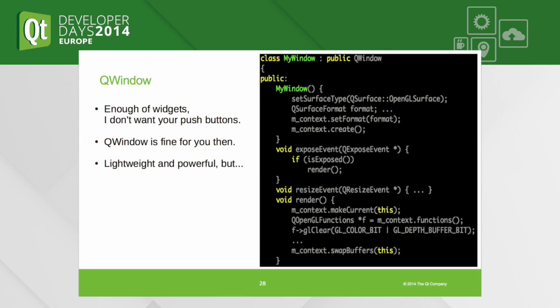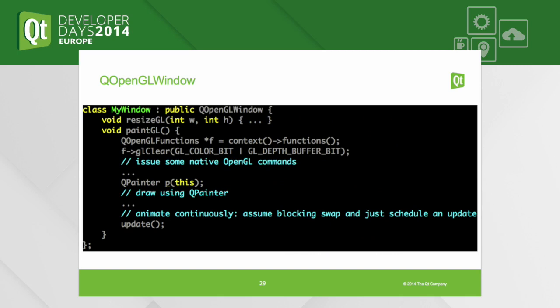So we have QOpenGLWindow — a QWindow that you inherit from just like the OpenGL widget, with the familiar naming pattern of initializeGL, resizeGL, paintGL. You can open a QPainter on it — with QWindow you'd need the OpenGL paint device or something to get a painter, but here it's just easier. It has an update function just like widgets. We just call update asynchronously from paintGL, which schedules the next frame. We rely on Vsync, and will continuously have paintGL called at a smooth and steady 60 FPS or similar rate.